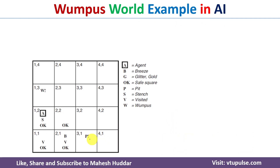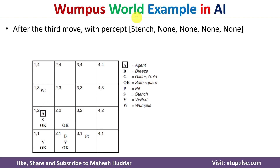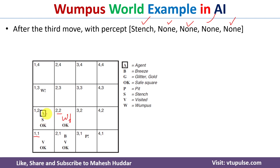When the agent goes to (1,2), it will perceive stench. It will not perceive breeze, glitter, bump, or scream. This means in an adjacent square there is a possibility of Wumpus. The adjacent squares are (1,1) — which is the safest, so no Wumpus there — (1,3), where there is a possibility of Wumpus, and (2,2), where there is also a possibility of Wumpus according to this square.